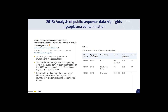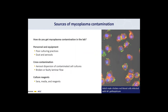Representative data from the report illustrates publications from high-impact journals that used mycoplasma-contaminated datasets. Some of these journals have been cited over 100 times and include Nature Biotechnology, Cell, and Cancer Cell. Turning to common sources of mycoplasma contamination: one of the most common ways is through personnel and equipment, resulting from poor culture practices as well as dust and aerosols. Cross-contamination is also a contributor — for example, aerosols from contaminated cell cultures or a broken laminar flow hood. Cell culture reagents such as sera, media, and reagents can also contribute.